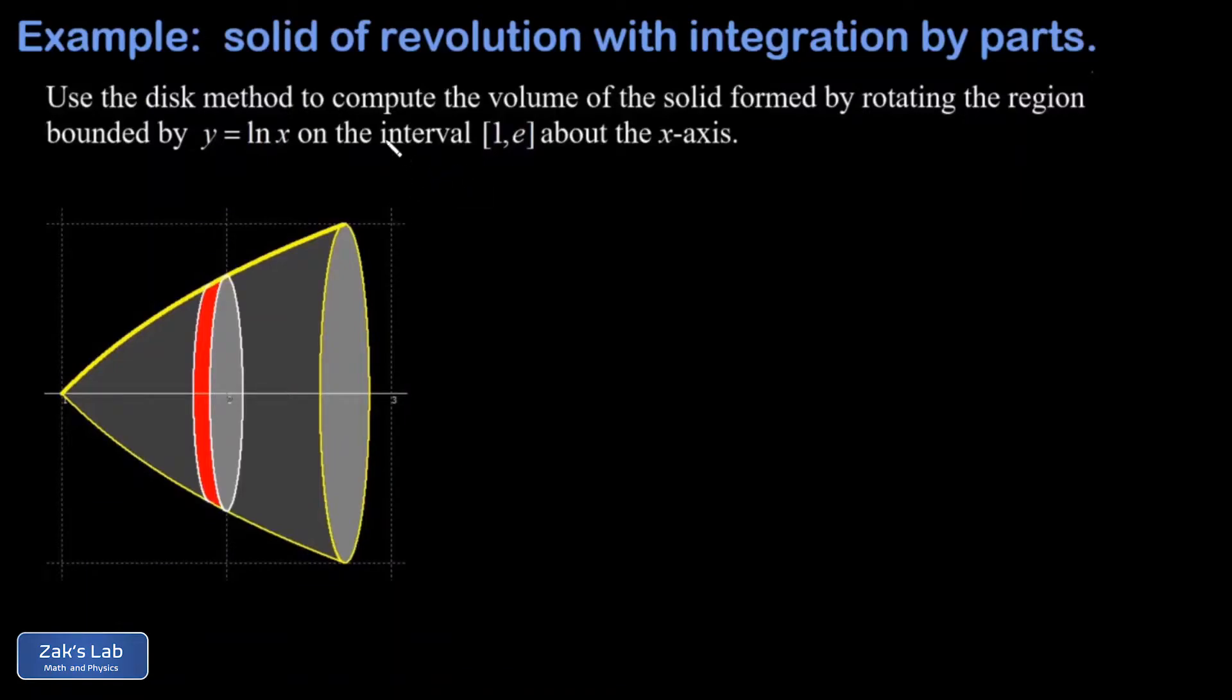In this problem we're revolving the curve y equals natural log x on the interval one to e, revolving that around the x-axis to obtain a solid of revolution. We want to use the disk method to find the volume of this thing, and it turns out that requires integration by parts. In the graphic we already have a picture of what one of these disks would look like.